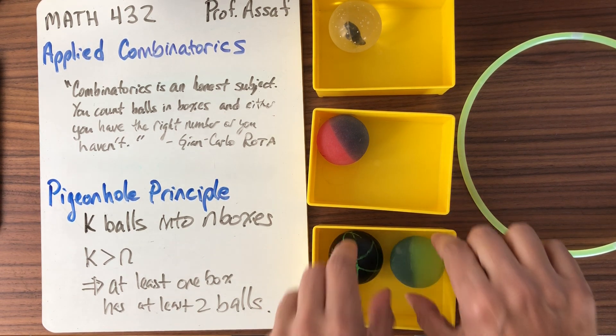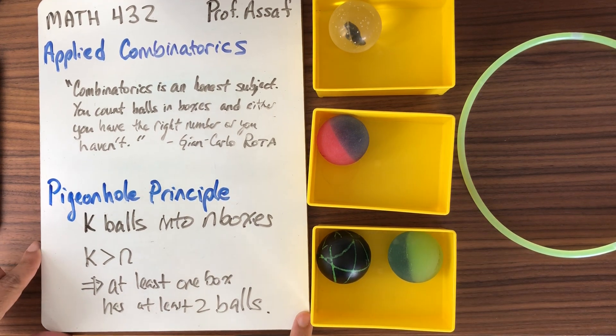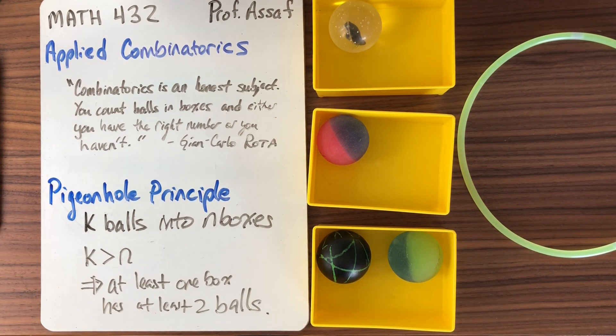The point is that there's no way I can do it so that I don't have at least one box with at least two balls. So whenever we have a statement like this that's sort of painfully obvious, intuitively, like yes, how could that possibly be false?